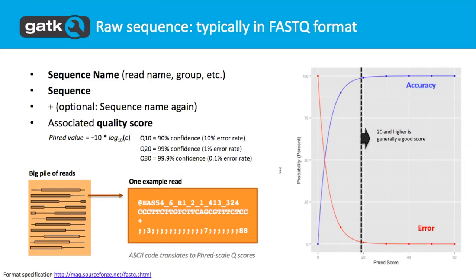The quality score is represented in Phred scale values. Basically, if we are 90% sure in our call, we apply the formula negative log base ten of the error probability and get a quality score of 10. If we're 99% sure, we get a quality score of 20. If we're 99.9% sure, we get a quality score of 30. It has a very logarithmic scaling, and basically everything above 20 is a pretty good score that we're happy to use in the analysis.